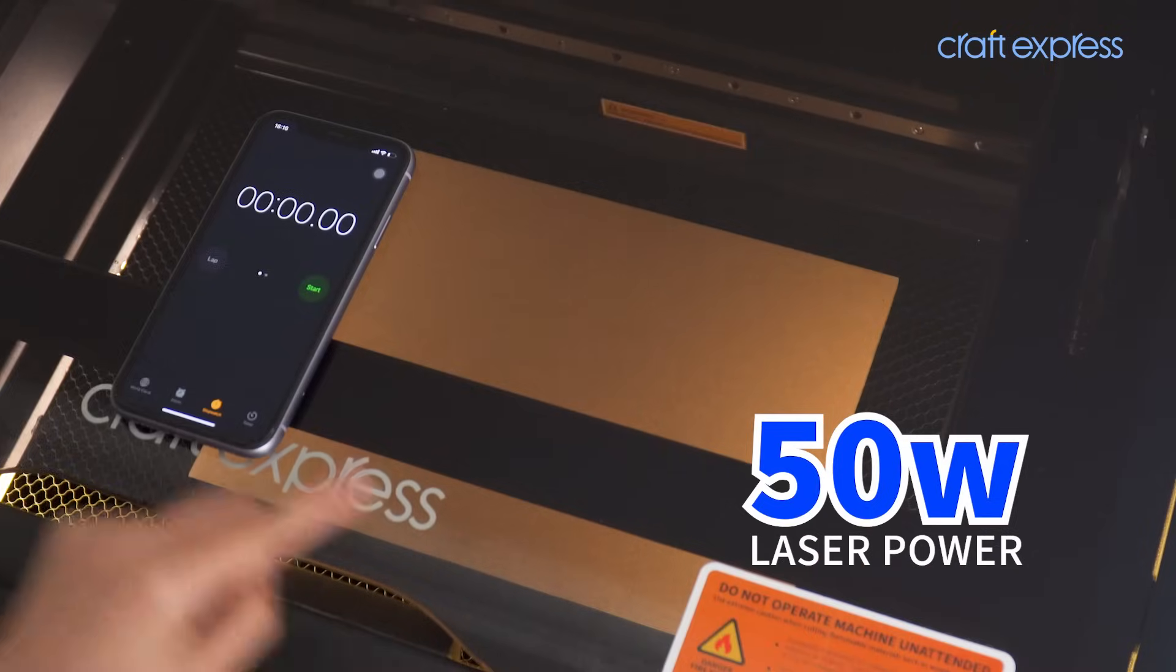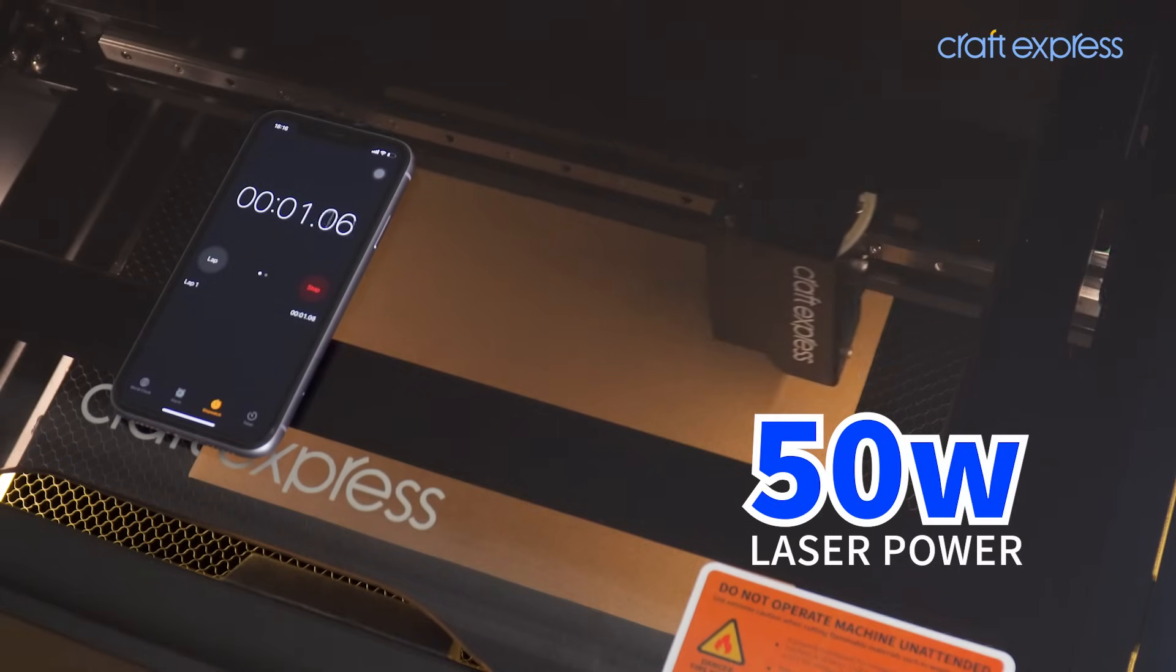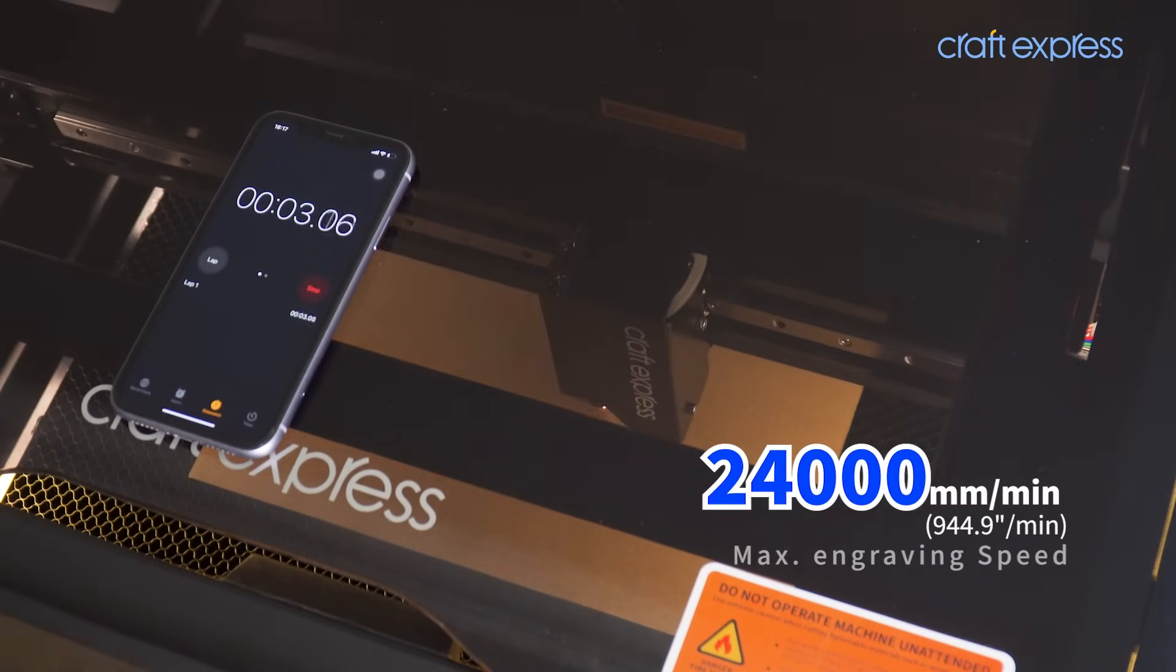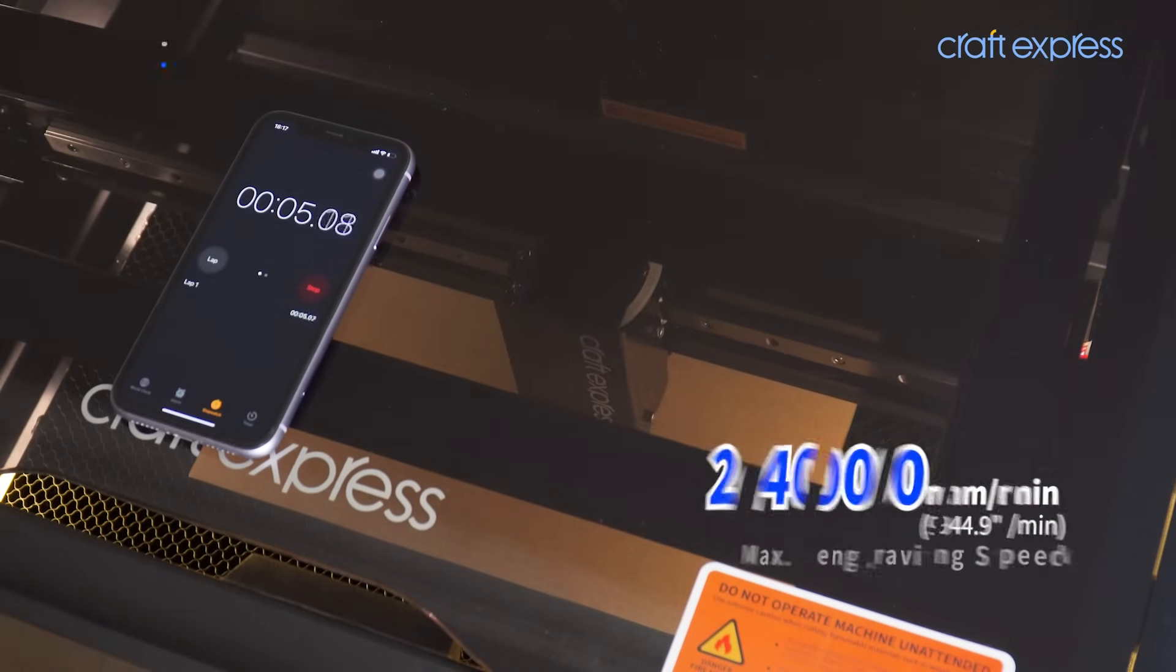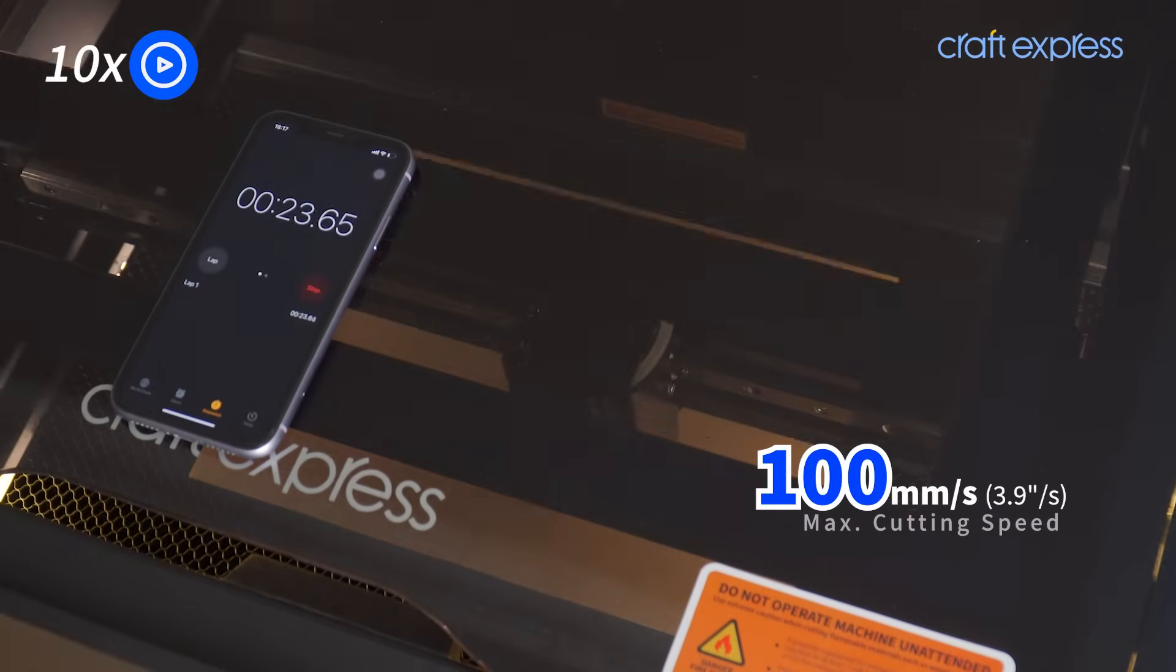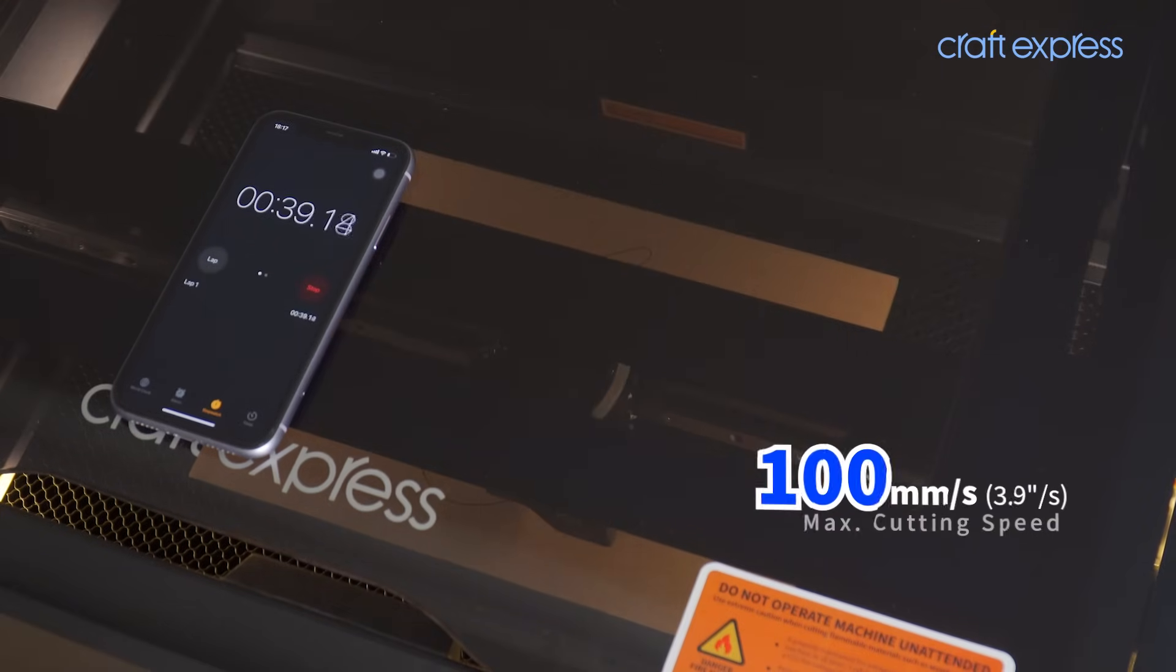The ArcSee 1 has a powerful 50-watt laser tube that can achieve a maximum engraving speed of 24,000 millimeters per minute, and the motor can provide a maximum cutting speed of 100 millimeters per second.